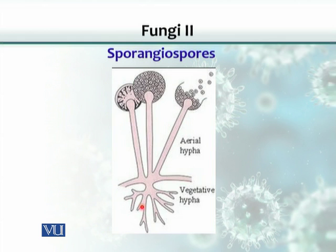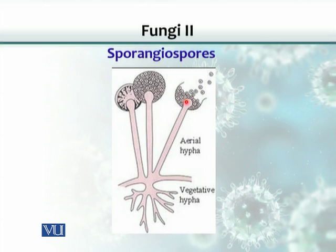As mentioned earlier, the vegetative hyphae absorb nutrients, while the aerial hyphae protrude above the surface of the medium and bear those sac-like structures. Within the sac-like structures, a number of spores are enclosed. With air currents or anything passing close to these spores, the sacs are so delicate that they get easily damaged and release the spores into the air, which can travel anywhere with air currents. That is why these fungi are present almost everywhere.